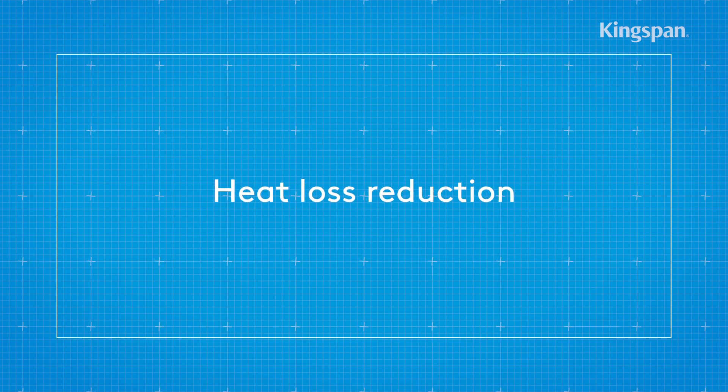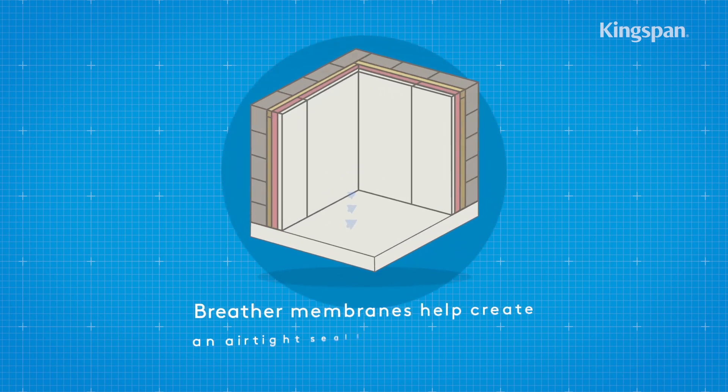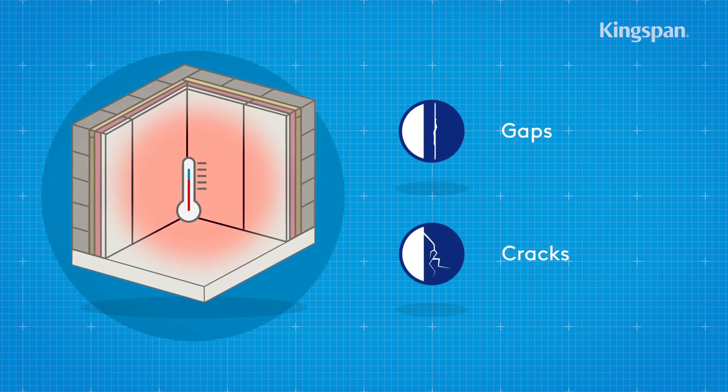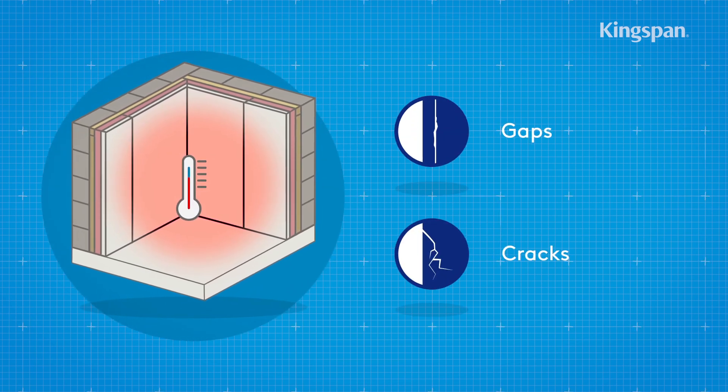Heat loss reduction: Breather membranes help create an airtight seal in the wall or roof. This reduces heat losses from multiple routes such as gaps and cracks.